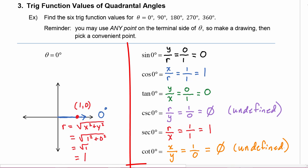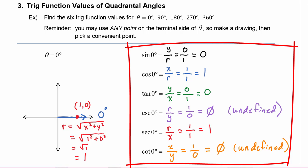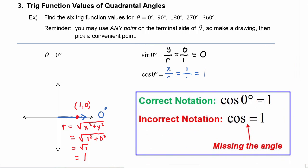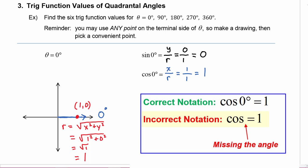So now we know the six trig function values when theta is equal to 0 degrees. Notice in all of these we have to make sure that we put the angle in there — this is the sine of 0 degrees, this is the cosine of 0 degrees; it's important to have the angle in there. Be sure to avoid the common mistake of having the angle missing from your trig function notation.